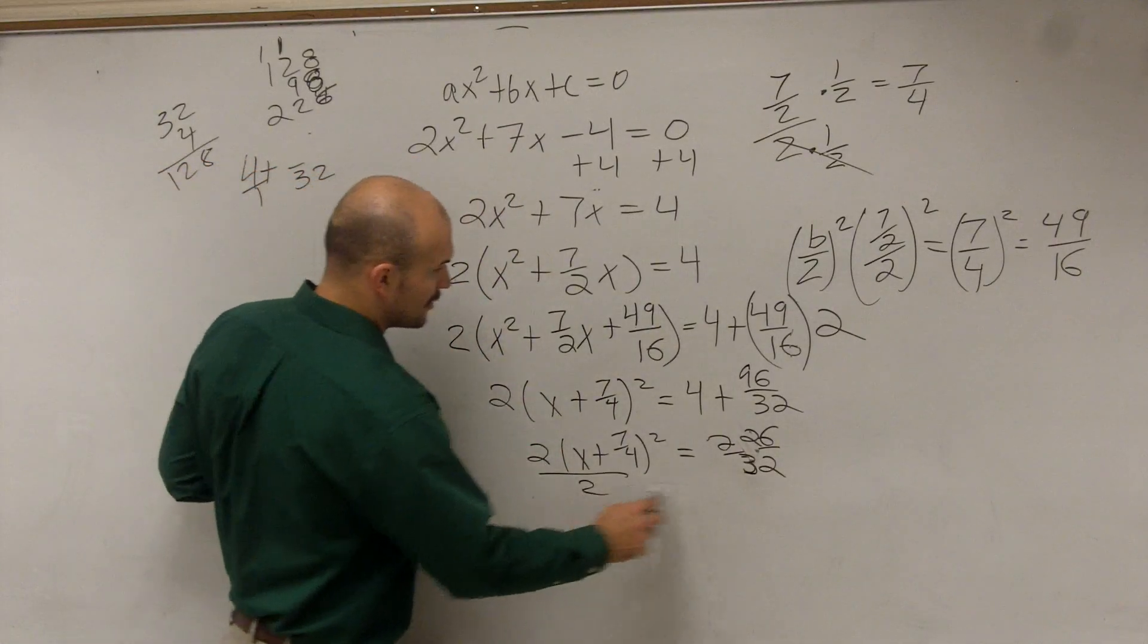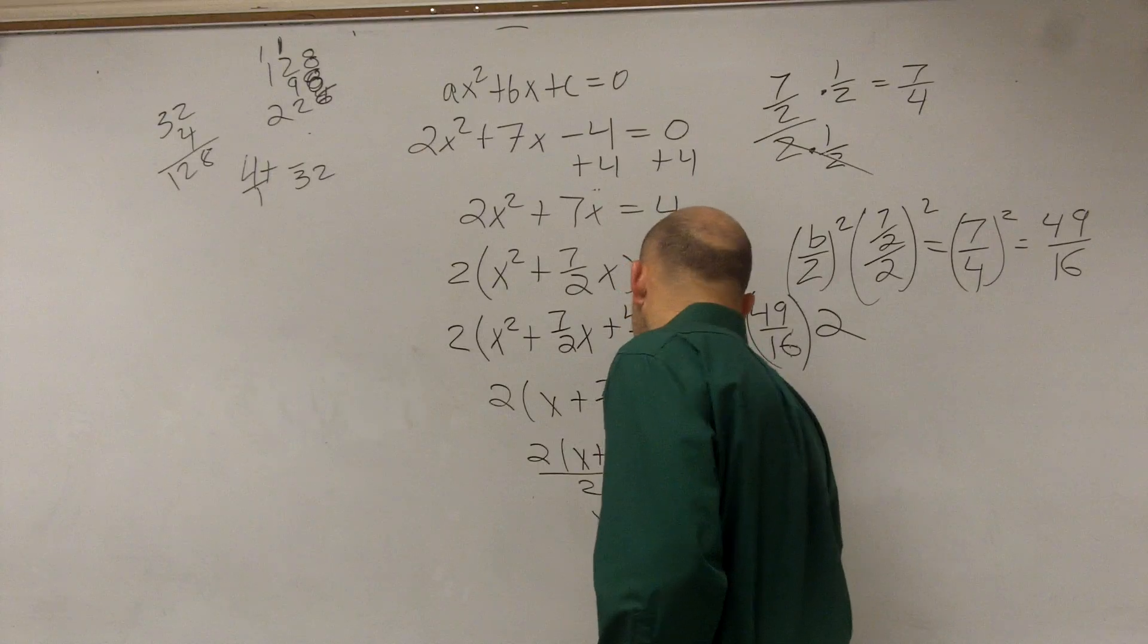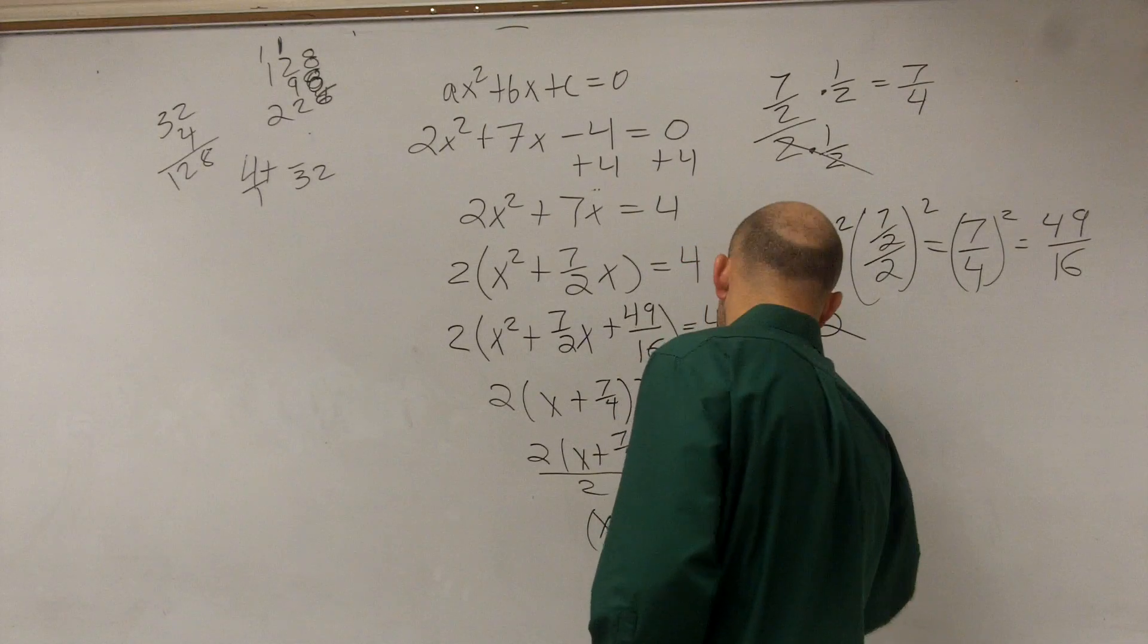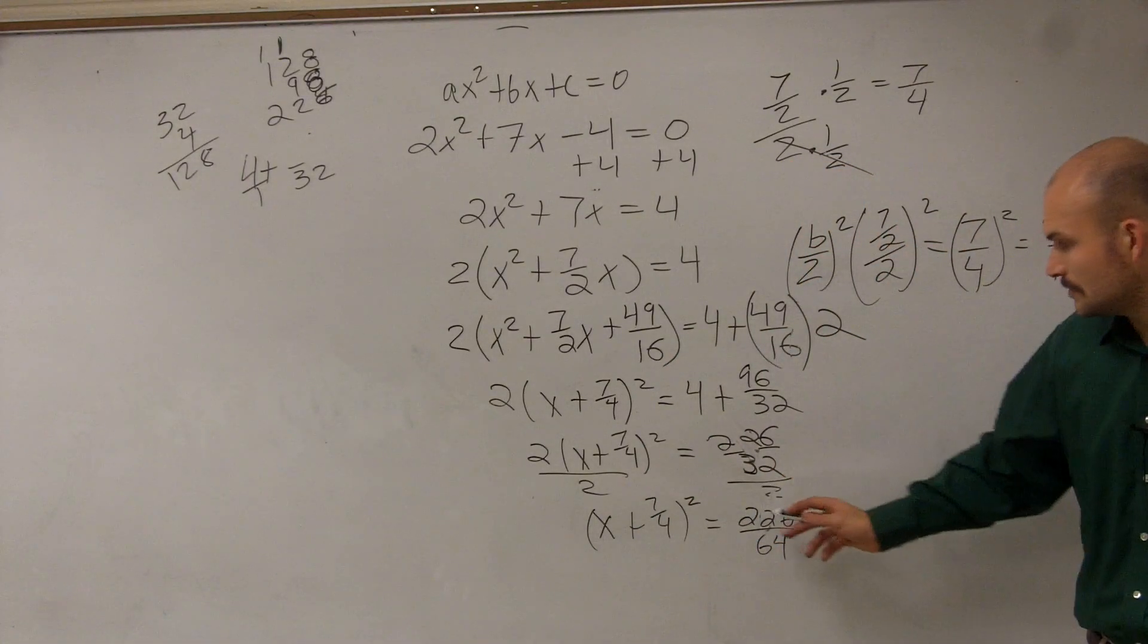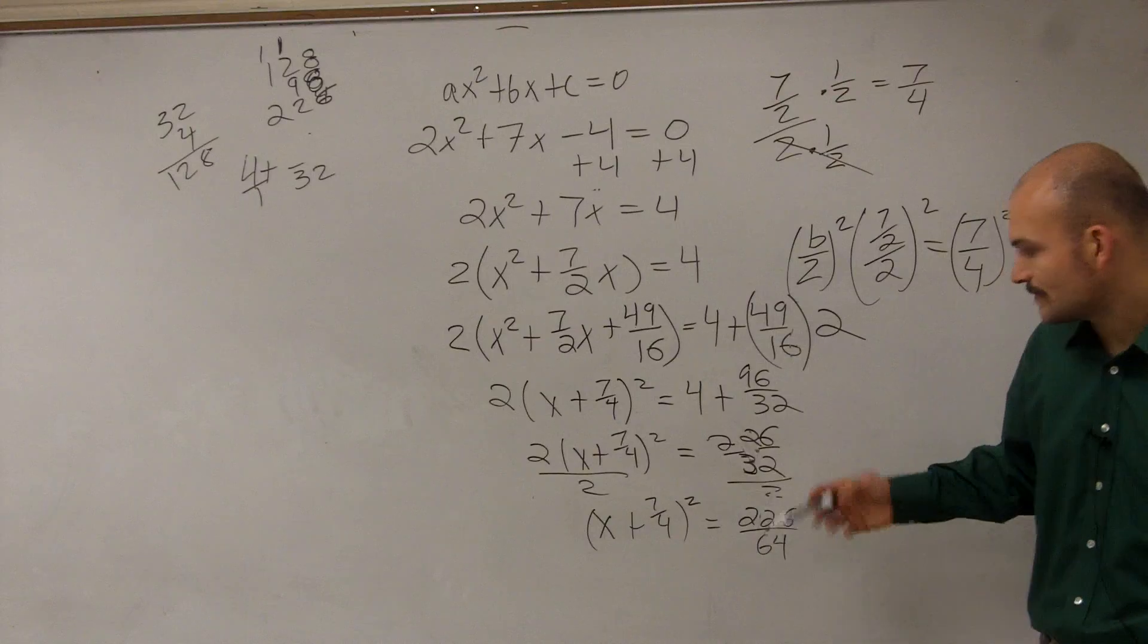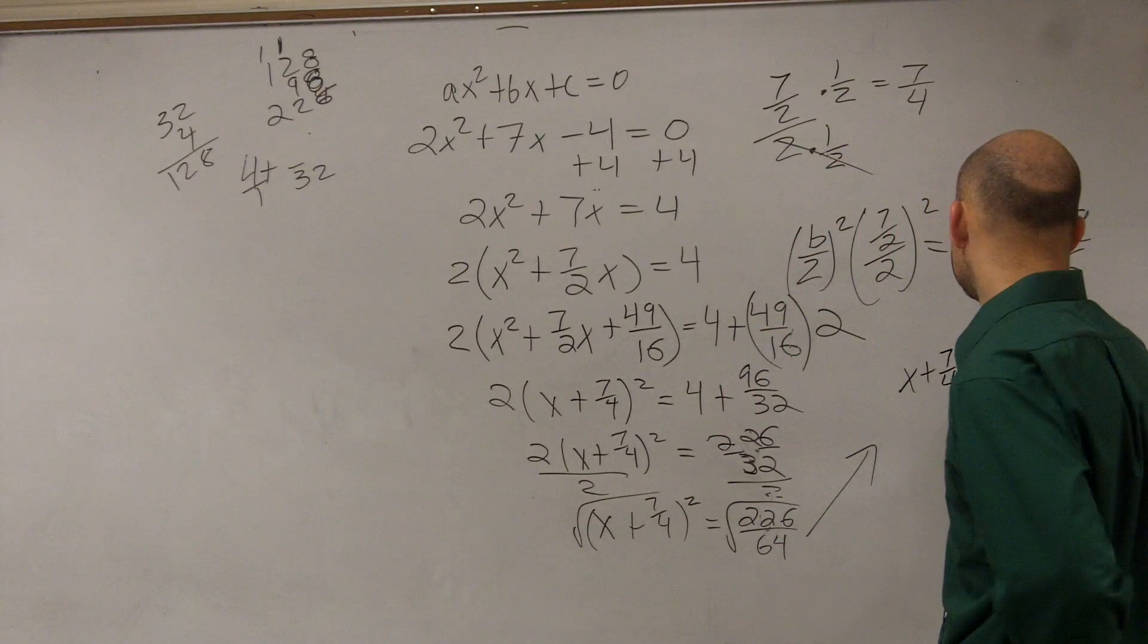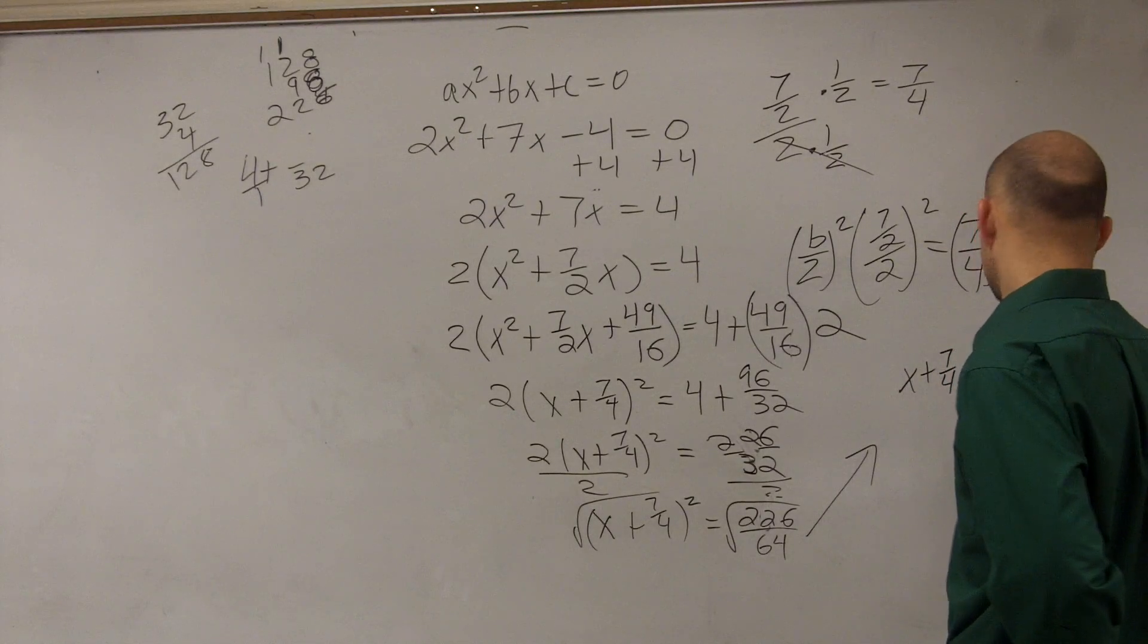Then, we have to divide by 2 on both sides. Because you've got to solve for x. So now, once you combine this, you divide by 2 on both sides. Divided by 2 is going to make that 64. Then, we take the square root. So therefore, you'll have x plus 7 divided by 4 equals the square root of, or plus or minus, the square root of 226 over 64.